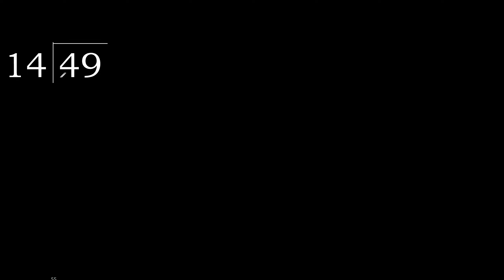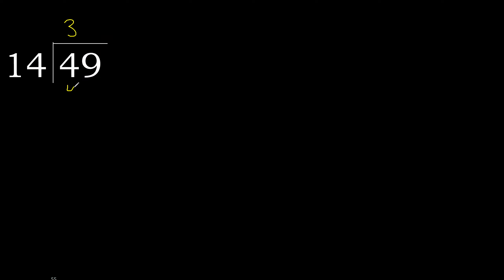49 divided by 14. 4 is less, therefore next. 49 is not less, therefore with 49: 14 multiplied by which number is nearest to 49 but not greater? 14 multiplied by 4 is 56 — 56 is greater. 14 multiplied by 3 is 42, which is not greater.